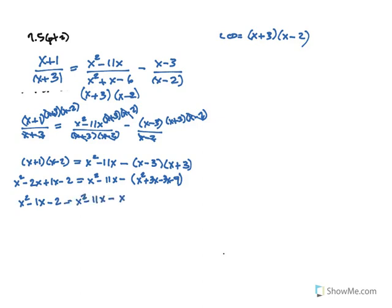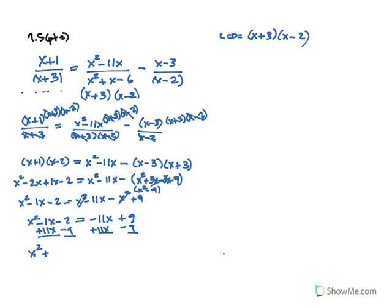This is a tedious problem. The 3x terms cancel out, leaving x squared minus 9. Then I distribute that negative. So x squared minus x minus 2 equals negative 11x plus 9. The x squared terms cancel out on the right, leaving negative 11x plus 9. I still have an x squared term on the left, so I have to get everything equal to 0. When you have an exponent other than 1 on your variable, you have to solve by factoring. So I make this equation equal 0 and move the 11x and the 9.